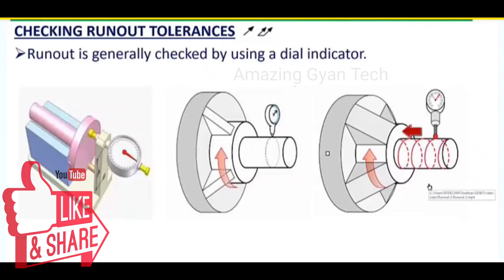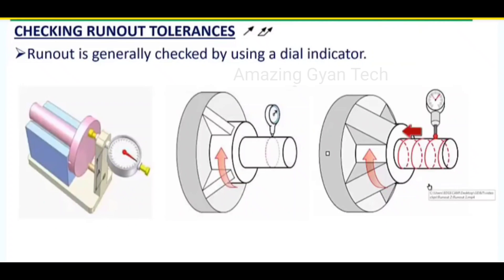Runout tolerance is mainly applied for rotating parts — for example, mainly in bearings and shafts. In machine tools, spindle runout is very important for a milling machine or lathe; spindle runout will be regularly checked. To get accuracy you need to check drill runout also — if the drill bit has runout, you will get a larger hole diameter. So if spindle runout is not proper and the tool also has runout, it is a problem. Runout should be within the given tolerance limit and it is mainly applied for rotating parts with respect to one axis.